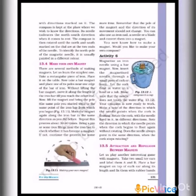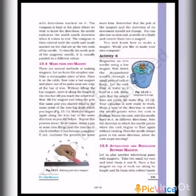The compass also has a dial with directions marked on it. The compass is kept at the place where we wish to know the directions. It indicates the north-south direction when it comes to rest. When we are moving into a forest, we can use the compass to know the direction. The compass is then rotated until the north and south marked on the dial are at the two ends of the needle.